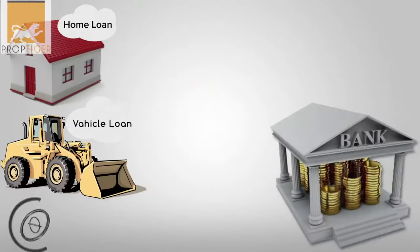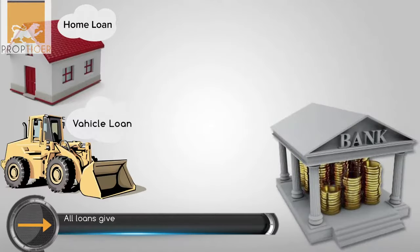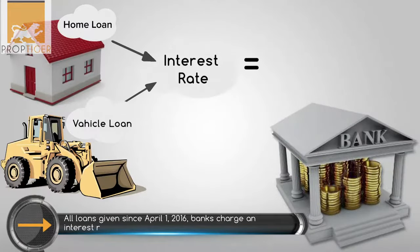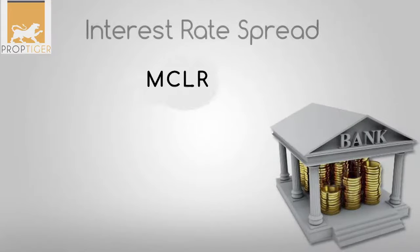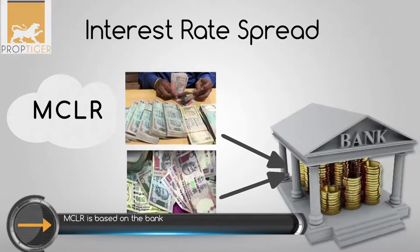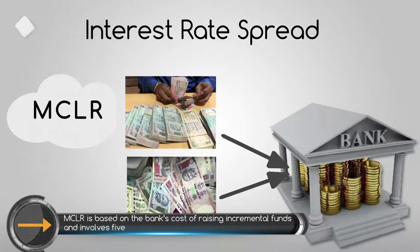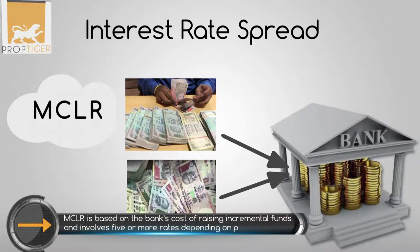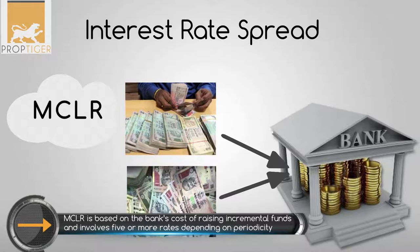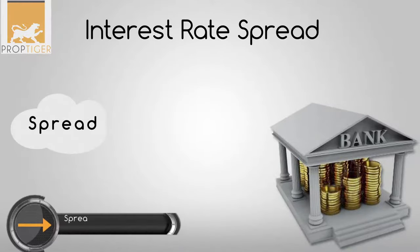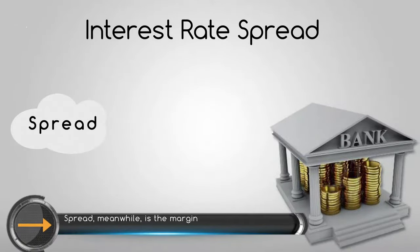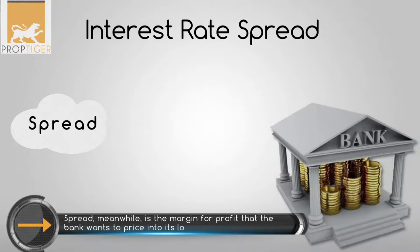Now, on all loans given since April 1, banks charge an interest rate that is a combination of MCLR and spread. MCLR is based on the bank's cost of raising incremental funds and involves five or more rates depending on periodicity. Spread, meanwhile, is the margin for profit that the bank wants to price in into its loan product.